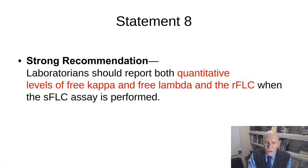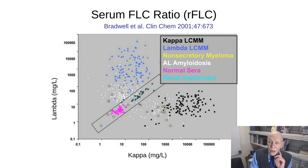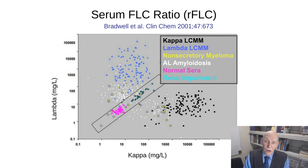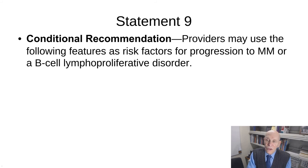Statement eight: laboratories should report both quantitative levels of free kappa and free lambda as well as the free light chain ratio. The evidence is very low because it's fairly straightforward. It is the ratio that is important, as shown from Bradwell's classic study to more recent work. Reporting free light chains without the ratio is not appropriate.